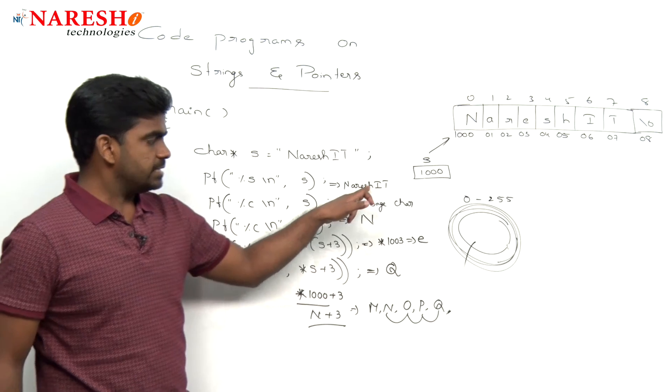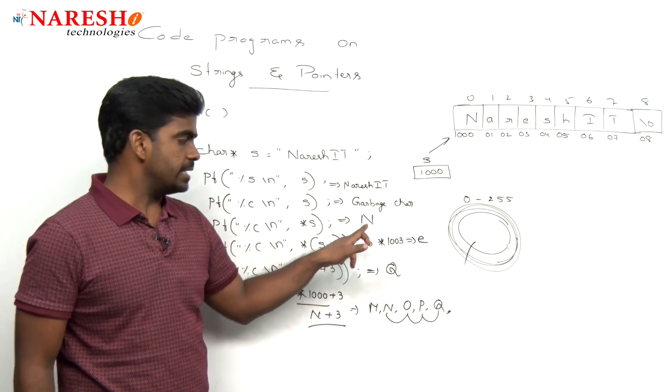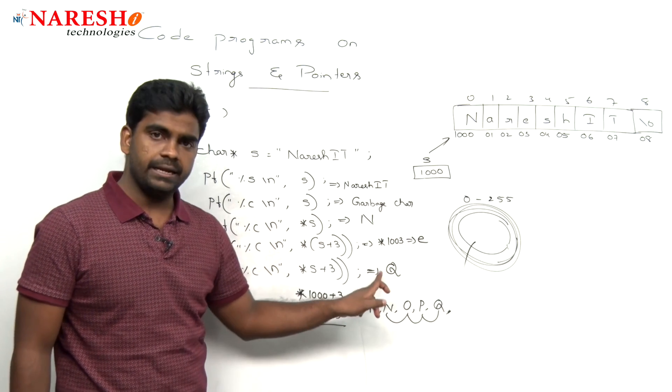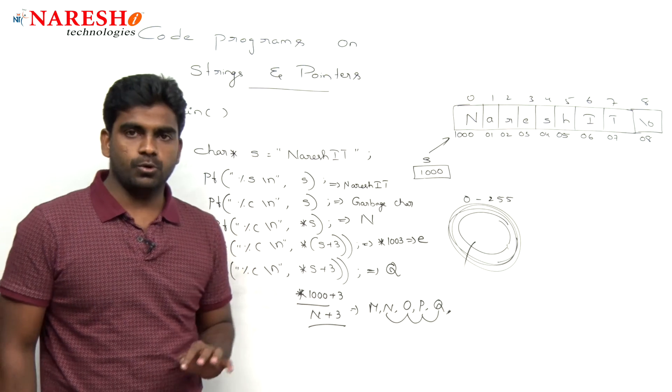So the output is Naresh IT, garbage character, N, small e, and capital Q. This is the output of this code.